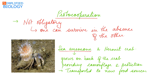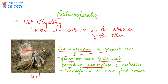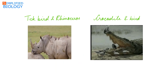The best example of proto-cooperation is the sea anemone and the hermit crab. The sea anemone gets attached to the shell of the hermit crab, growing on its back, providing camouflage and protecting the crab from predators. In the process, the sea anemone gets transported by the crab to new food sources.